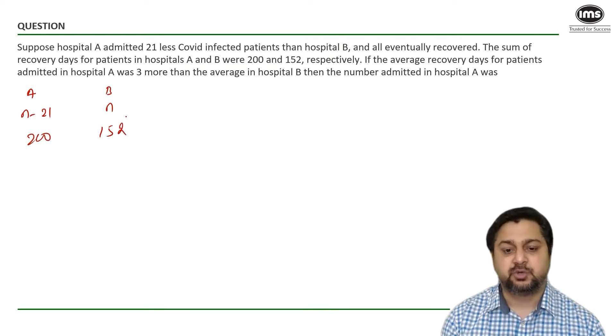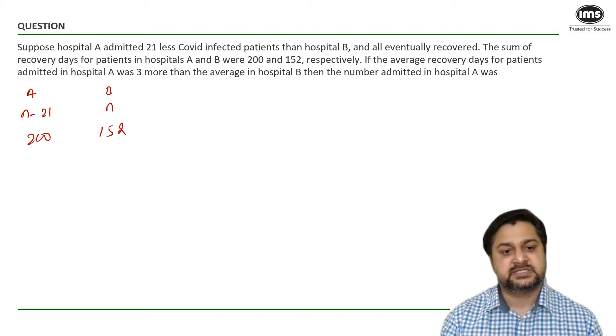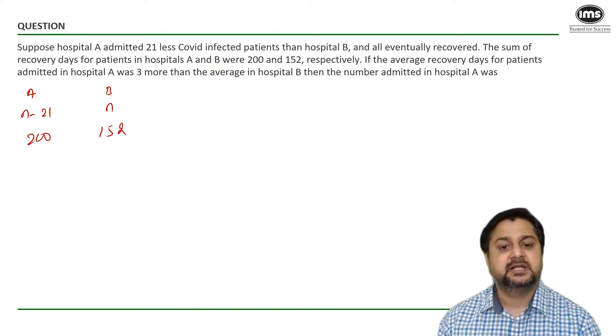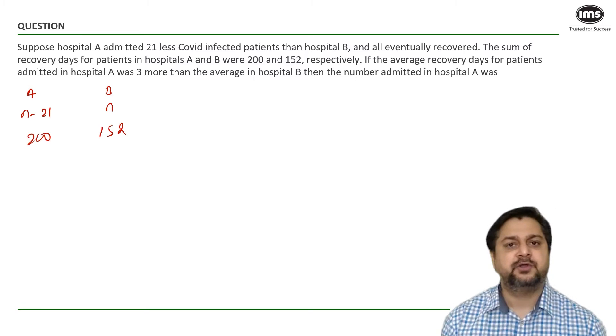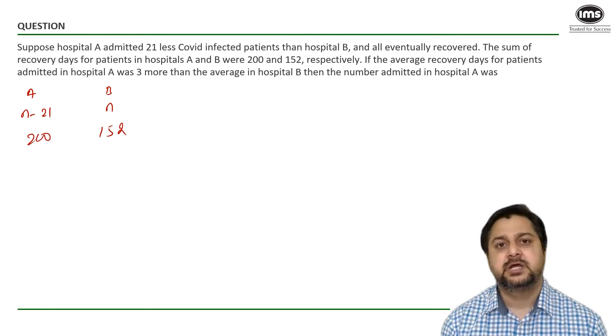Furthermore, it is told to us that if the average recovery days for patients admitted in hospital A was 3 more than the average in hospital B. So how do you find out the average number of days taken by the patients of any of the hospitals to recover?